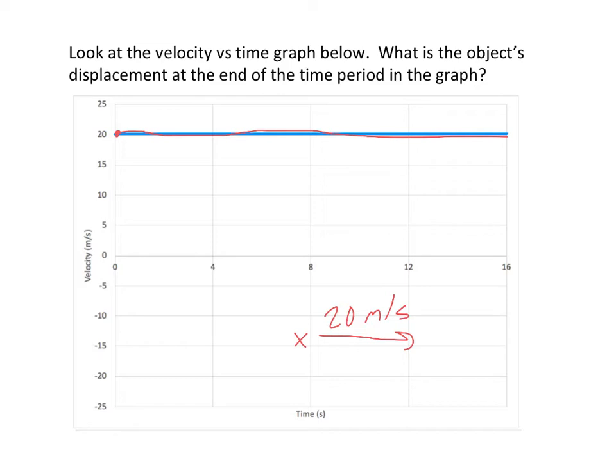So hopefully it makes sense to you that we would take this speed or velocity and multiply it by 16 seconds, right? If you go 20 meters every second and you do that for 16 seconds, how far do you go? And if you do that, you get 320 meters. Those are the units because meters per second times seconds, the seconds cancel. So that is how you do it with sort of like a velocity equation.